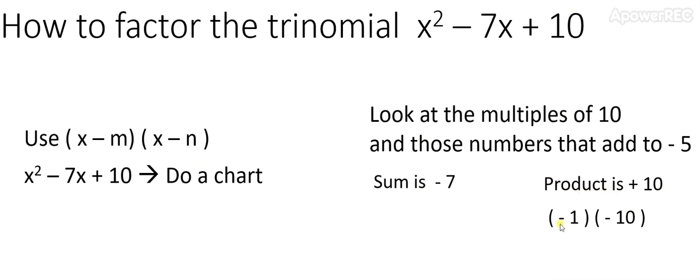So if we try negative 1 times negative 10, it does give us positive 10, the last term. So good so far. But look at their sum. Negative 1 minus 10 is negative 11. Clearly, this pair fails to meet our criteria. So let's find another pair.